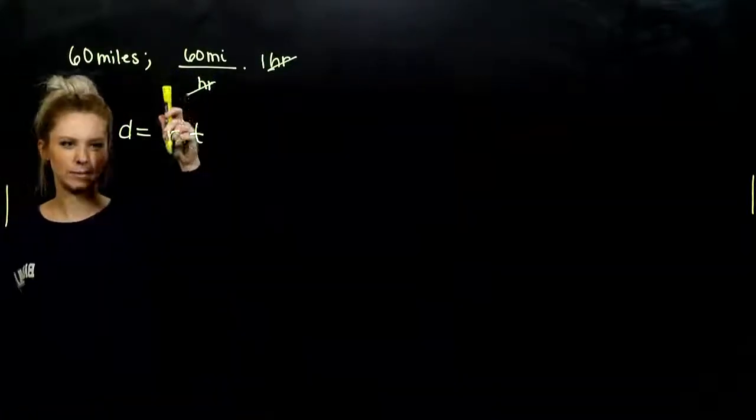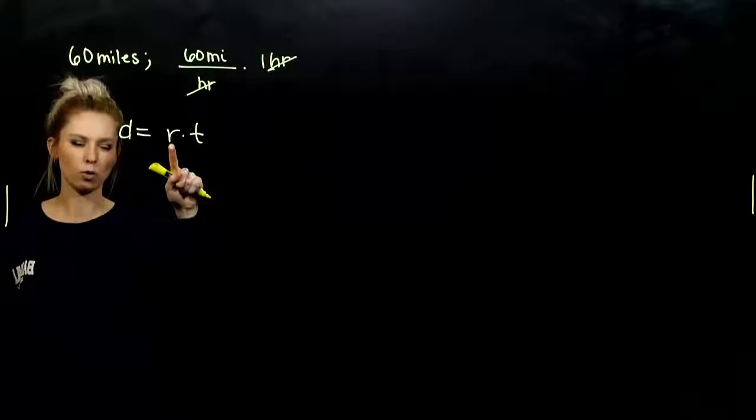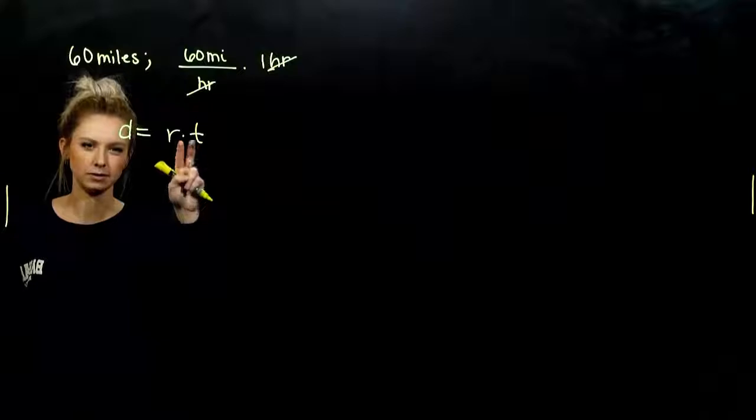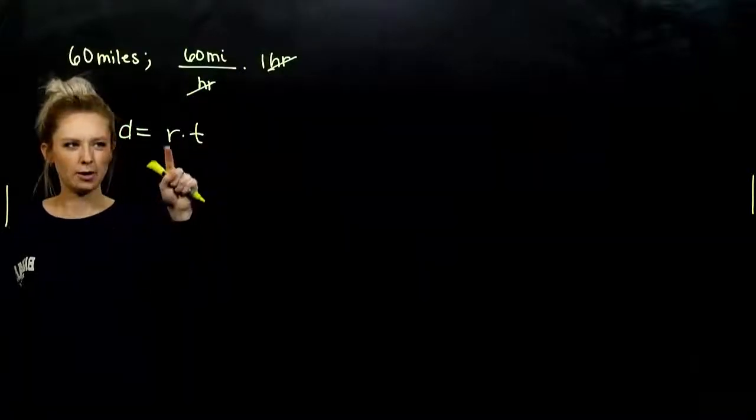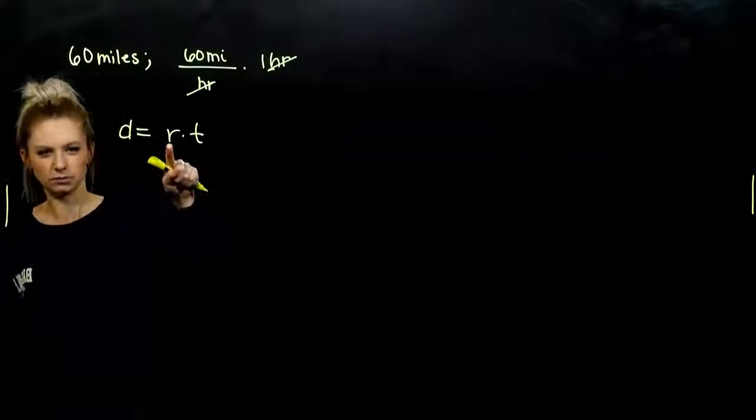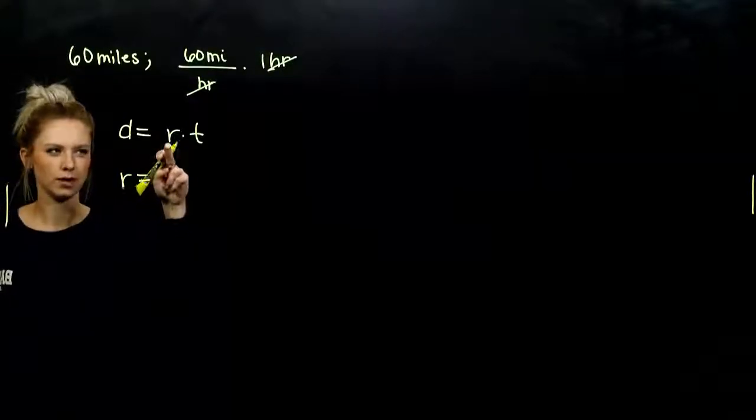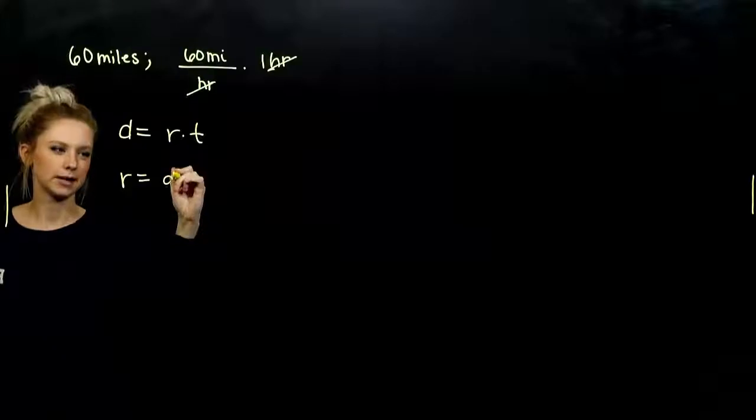And we have equivalent forms of this relationship. So like our last example, I had information about rate and time. So figuring out the distance was pretty straightforward. I just have to multiply these two. But what about if I want to get r on its own? So if I'm trying to figure out the rate, what is that one equivalent to?